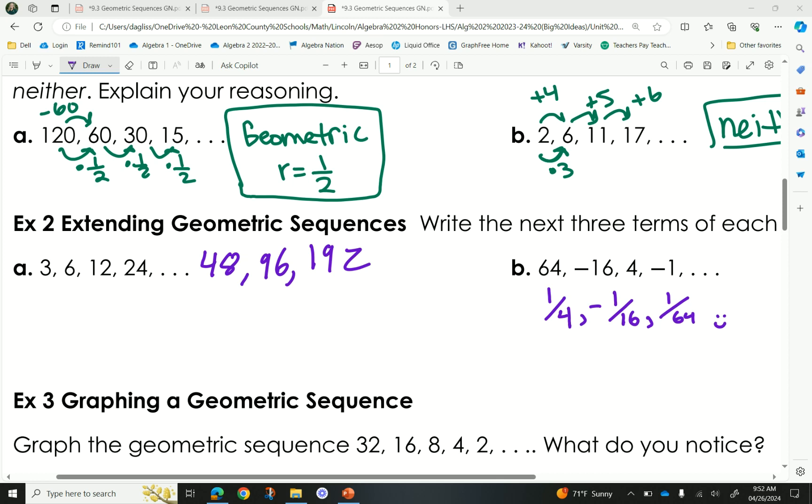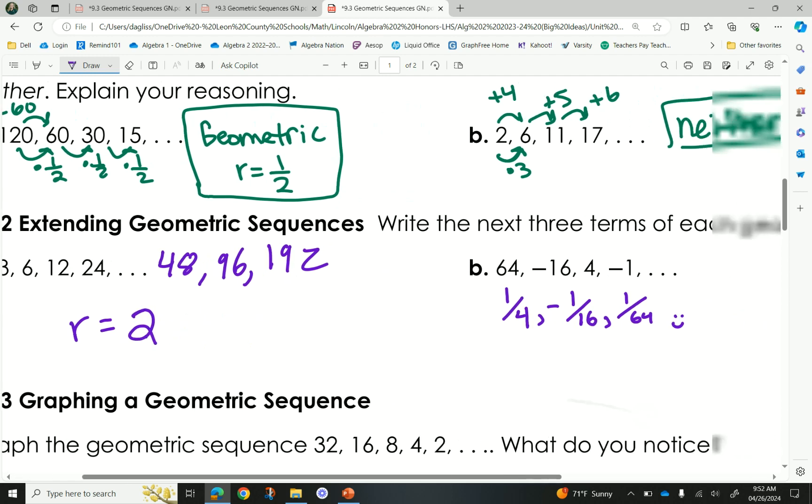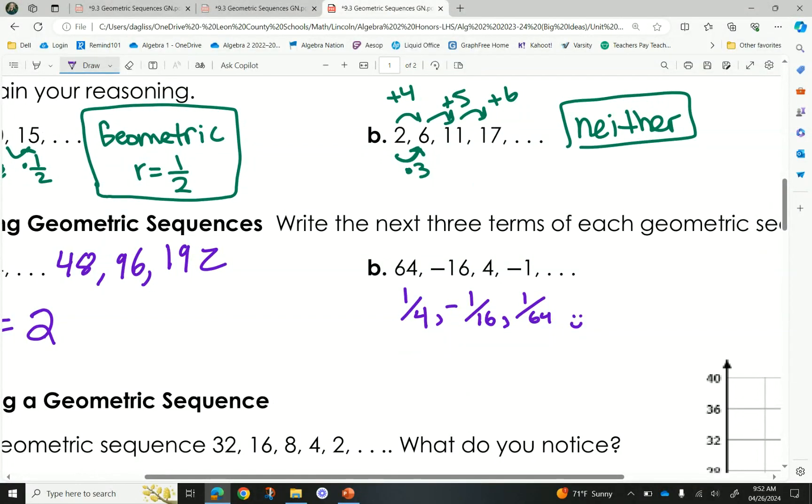All right. So, for part A, Riley gave us forty-eight, ninety-six, and one ninety-two. Do you agree? Yes. Yes. What was your common ratio for this one? It was two. Good. Part B, Dianna gave us one-fourth, negative one-sixteenth, and one-sixty-fourth. Do you agree? Yes. What was your common ratio for this one? Negative one over four. Good.